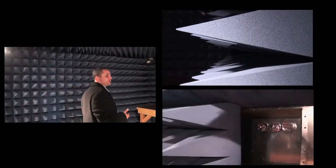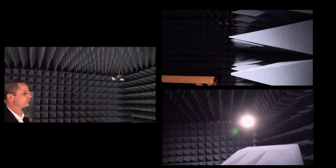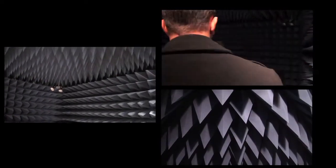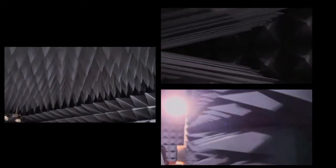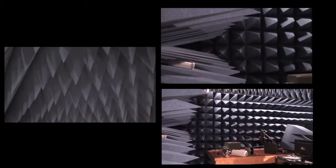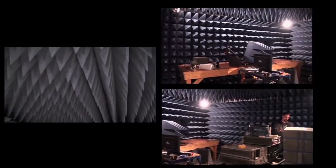So this is inside one of our mill chambers. As you can see, the chamber's lined with 24-inch pyramidal anechoic material, used for absorption of electromagnetic waves per mill standard 461 as well as D0160.